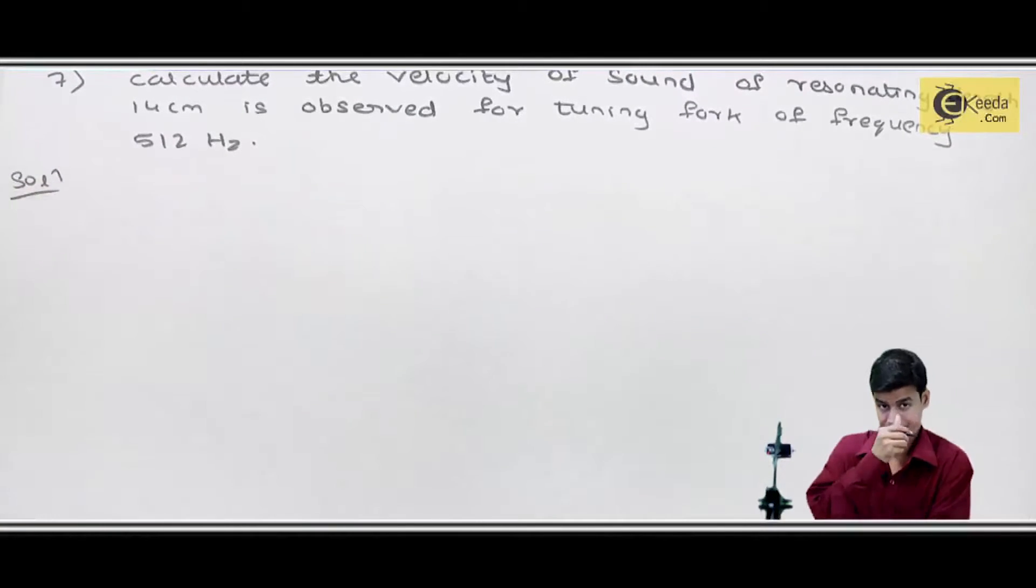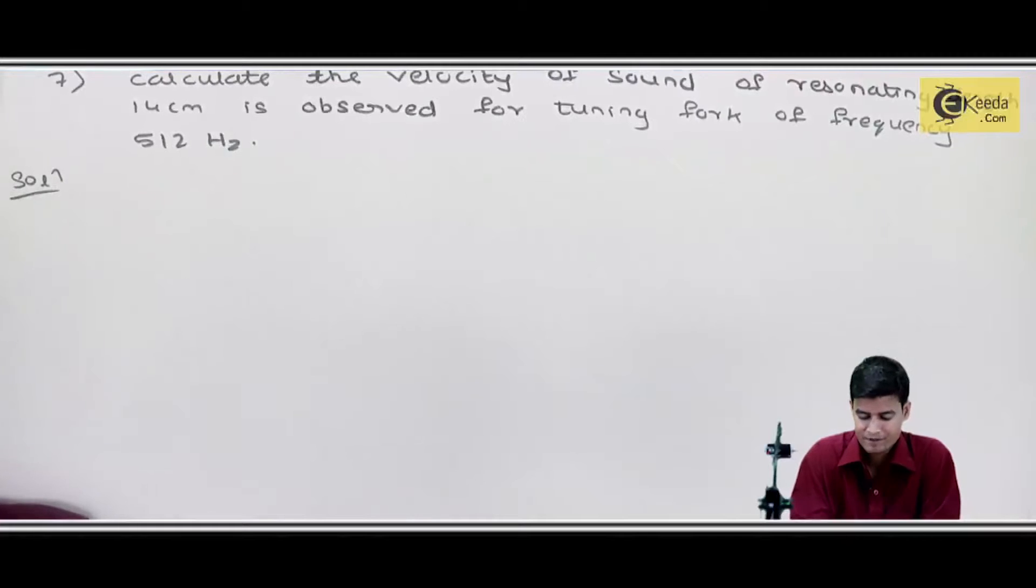Okay, now we will see what we have given in the problem. Calculate the velocity of sound of resonant length 14 cm is observed for tuning fork of frequency 512 hertz.